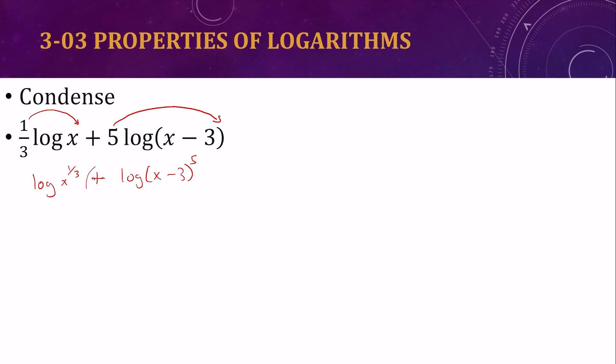And we're adding. So adding means we rewrite it as multiplication. Now we're just going to multiply the things in the log. So it would be x to the third times x minus 3 to the fifth. So it's one logarithm. We multiplied the things together that were inside of it.